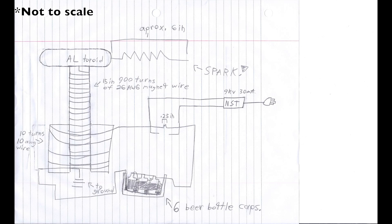This adds up to about 15 inches of total winding length. The top toroid is probably going to be aluminum, and the spark should be around 6 inches long.